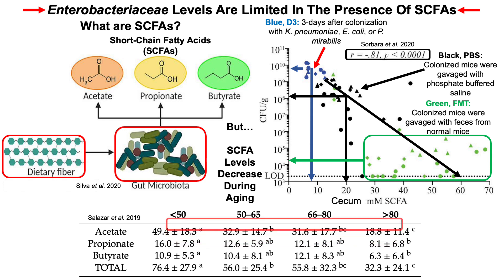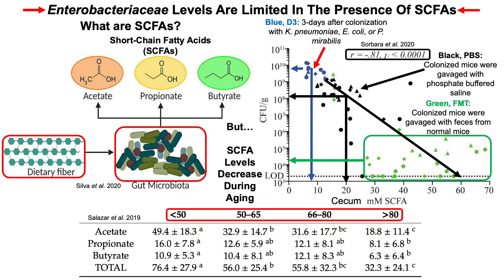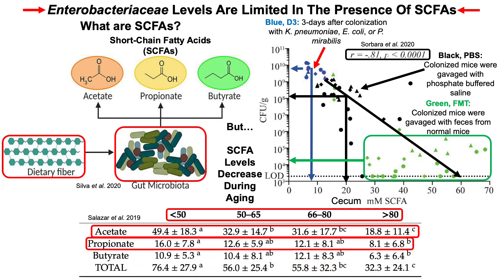This is human data. Looking at four different age groups — younger than 50, 50 to 65, 66 to 80, and older than 80 — for each short-chain fatty acid (acetate, propionate, and butyrate), there is at least close to a 50% reduction comparing the youngest group to the oldest. Acetate drops from 49 millimolar to about 19 millimolar; propionate from 16 millimolar to 8 millimolar; and butyrate shows a similar approaching-50% reduction. Total short-chain fatty acids are more than halved in adults older than 80 compared to those younger than 50.